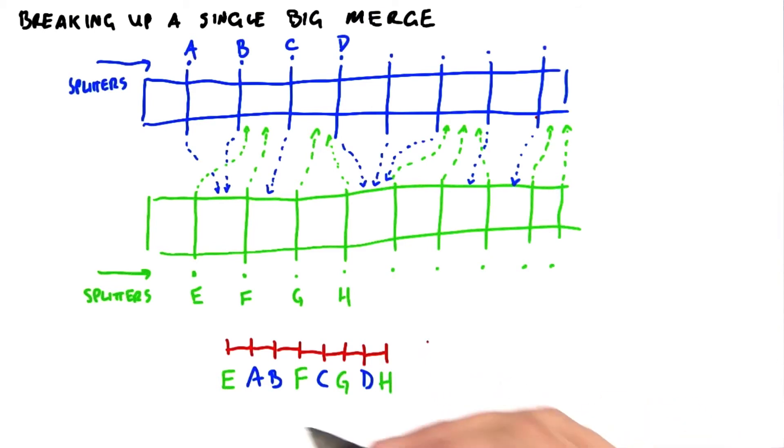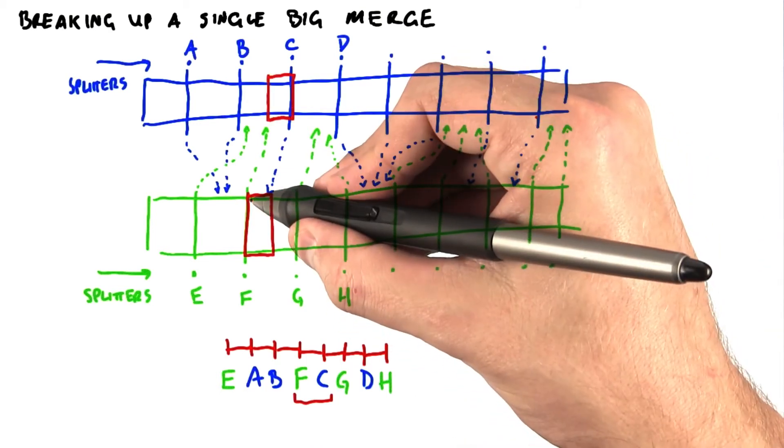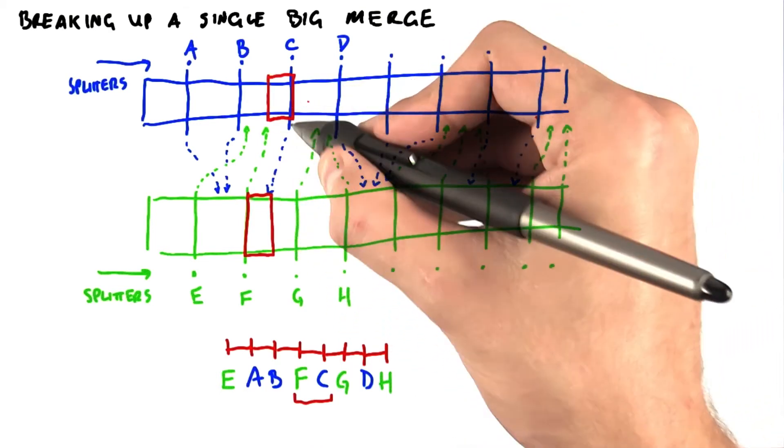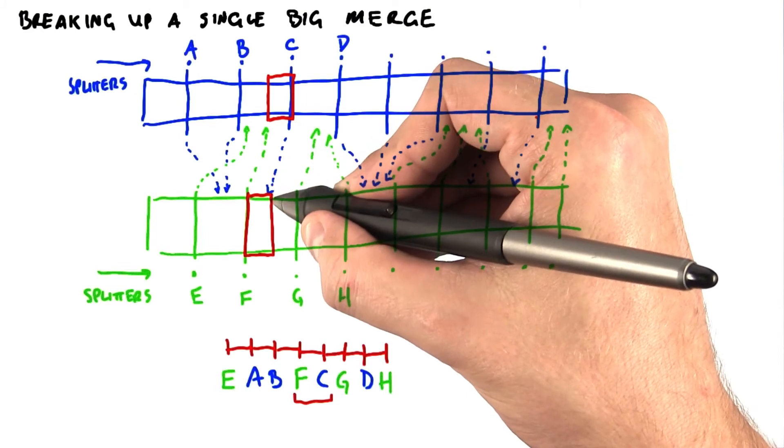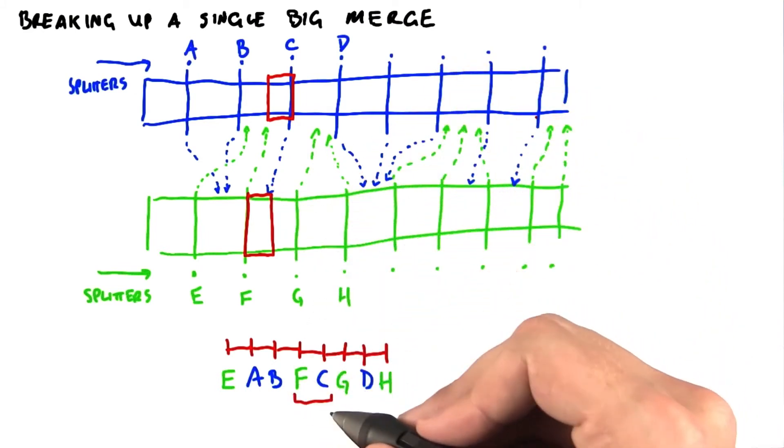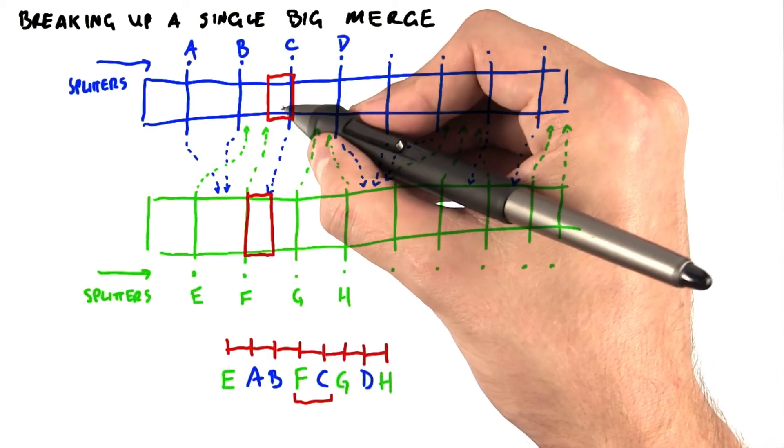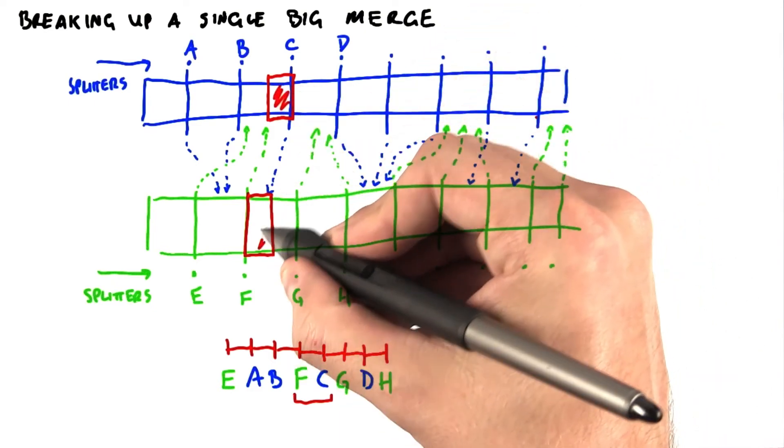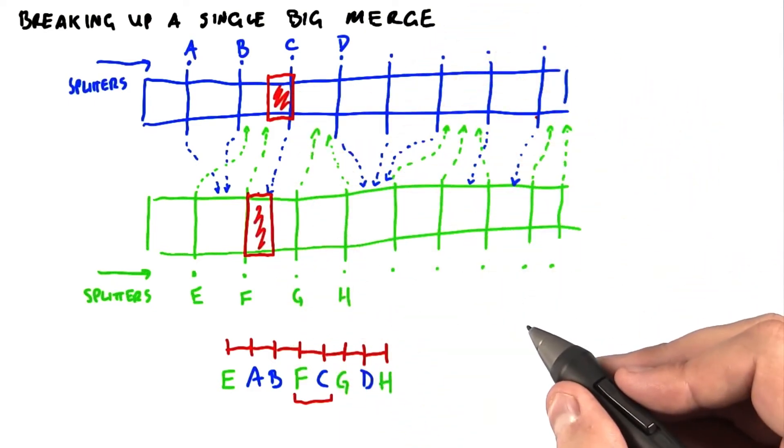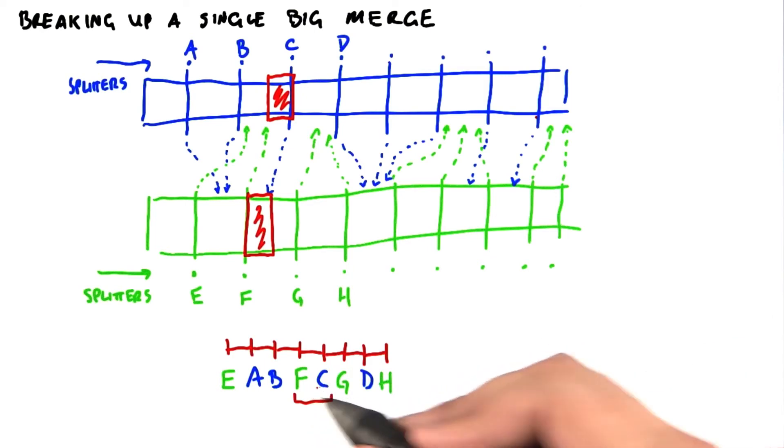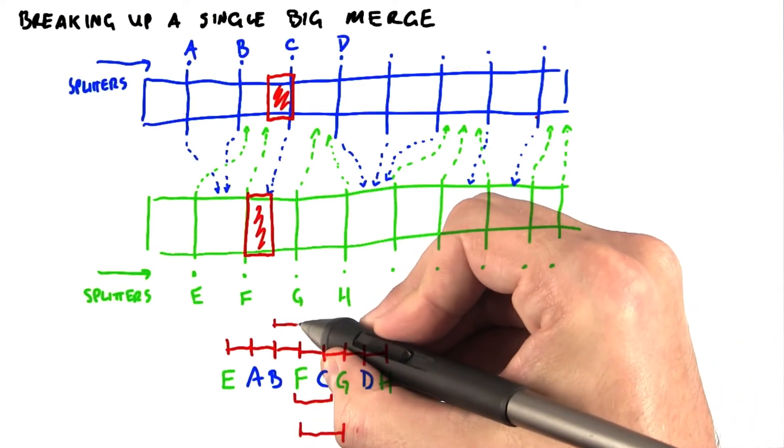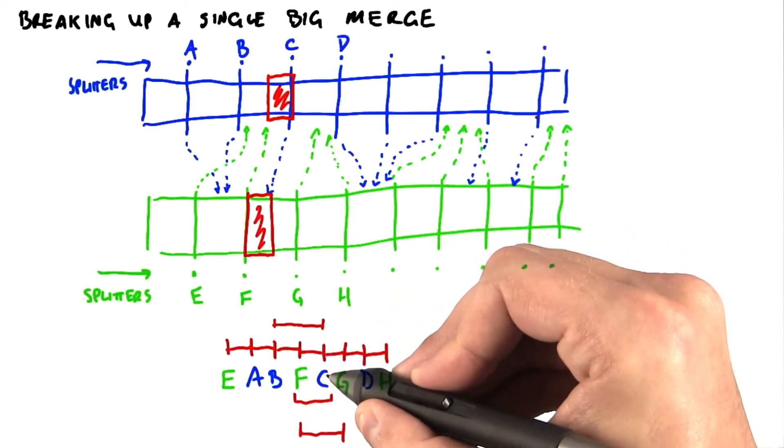So let's look at this in a little bit more detail with the elements between F and C. We can calculate the position of F in C's list. We can calculate the position of C in F's list. And so the work that we need to do for the pair defined by F and C is to merge this list with this list. And one of our goals was to make sure that none of these sublists would be too big. And we can guarantee that because we know that there are no more than 256 elements between F and G. And we know there are no more than 256 elements between B and C.